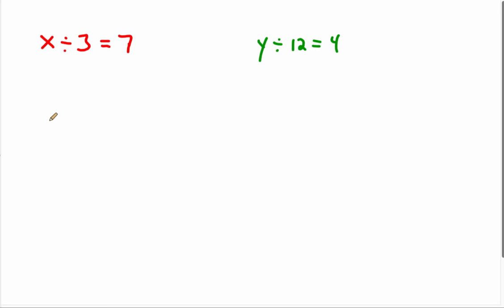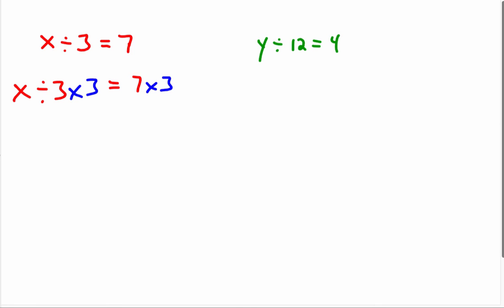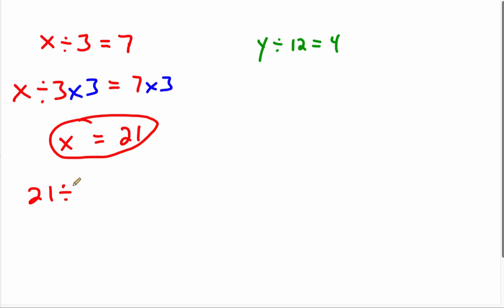Similar to the division property of equality, we can solve an equation that involves division by using multiplication. If we have x divided by three equals seven, to counteract division by three we can multiply by three on both sides. The division by three and multiplication by three cancel each other out, so we end up with x equals twenty-one. We can check that by plugging twenty-one back into the original equation: twenty-one divided by three equals seven. Yes, that's correct.